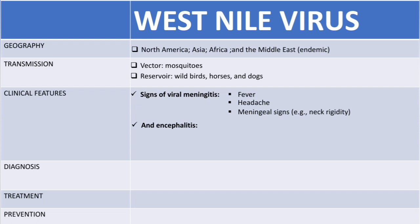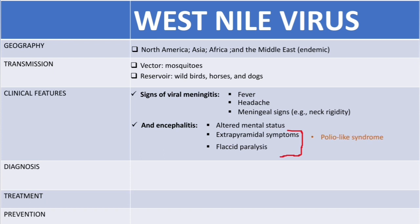On encephalitis, the patient will show altered mental status, extrapyramidal symptoms, and flaccid paralysis. Patients who show these motor symptoms may also develop a polio-like syndrome, which involves pathology of the anterior horn of the spinal cord. Some patients may also show symptoms of Guillain-Barré syndrome, which is associated with demyelination.